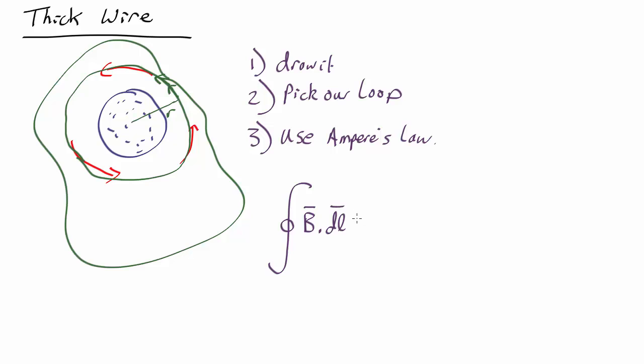equals mu nought times the sum of the currents inside, which in this case is just the current going down in the thick wire I.